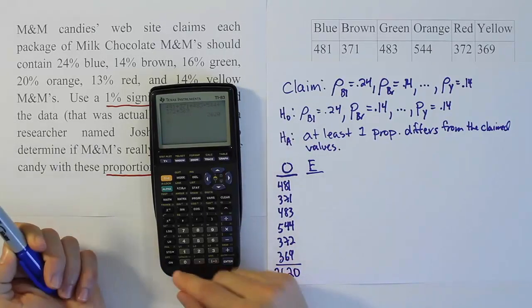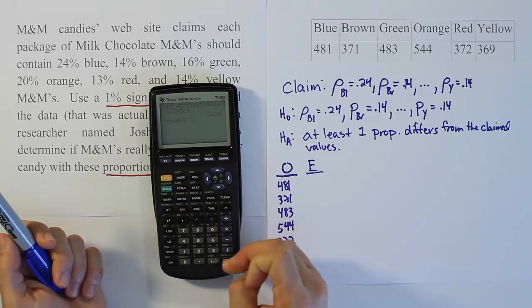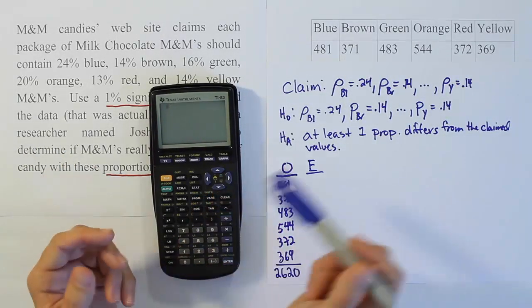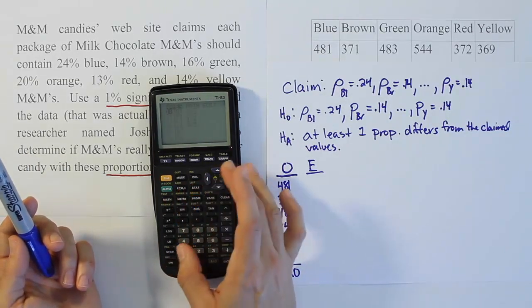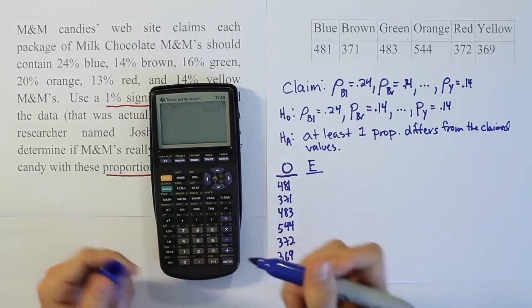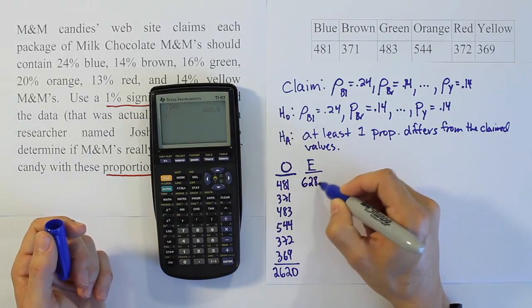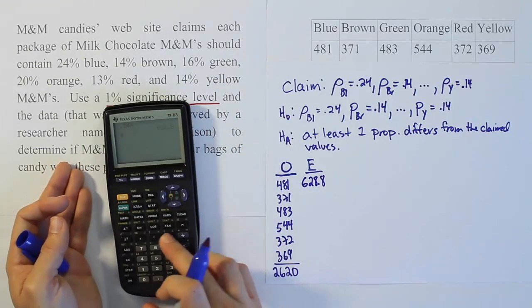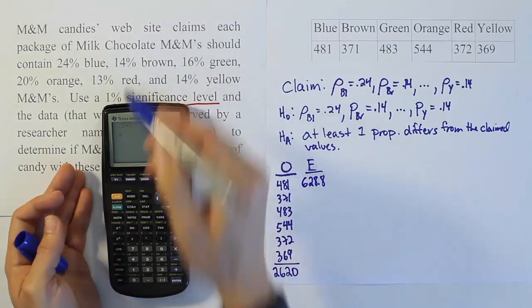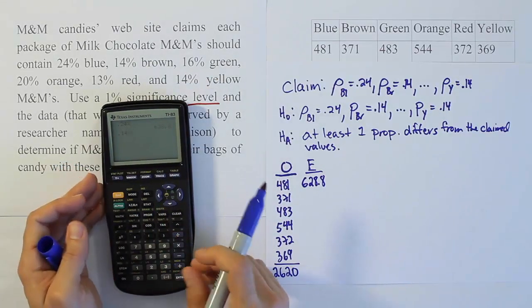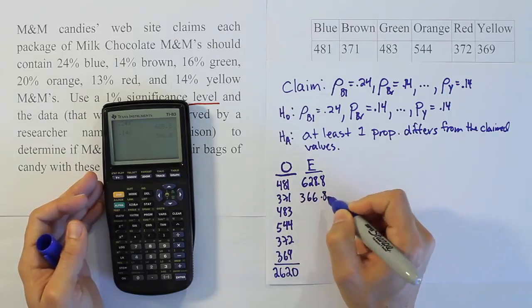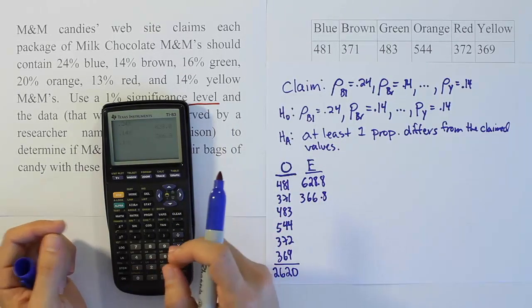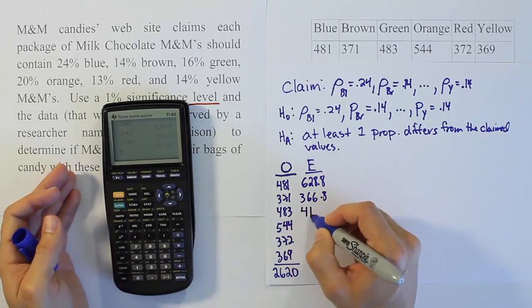Now the expectations based on that. I'll store 2620 as x in my calculator. The expected value for blue is 0.24 times x, which gives 628.8. Then brown is 0.14 times x, giving 366.8. Green is 0.16 times x, giving 419.2.